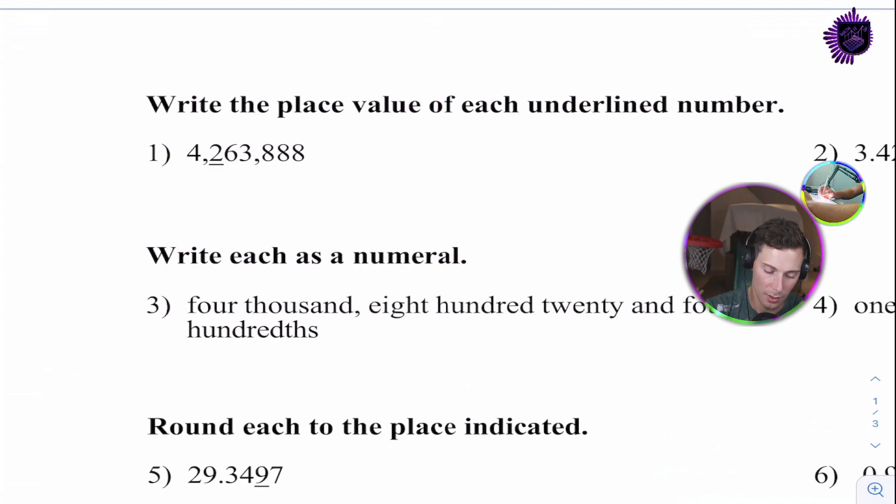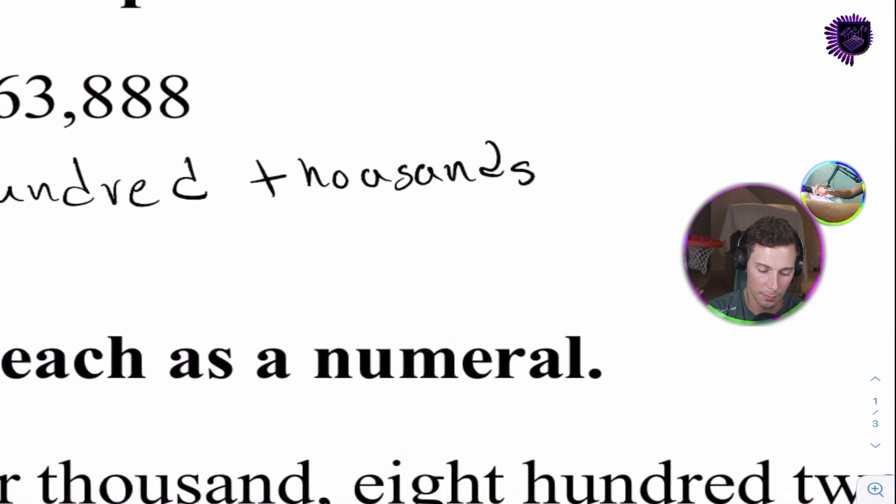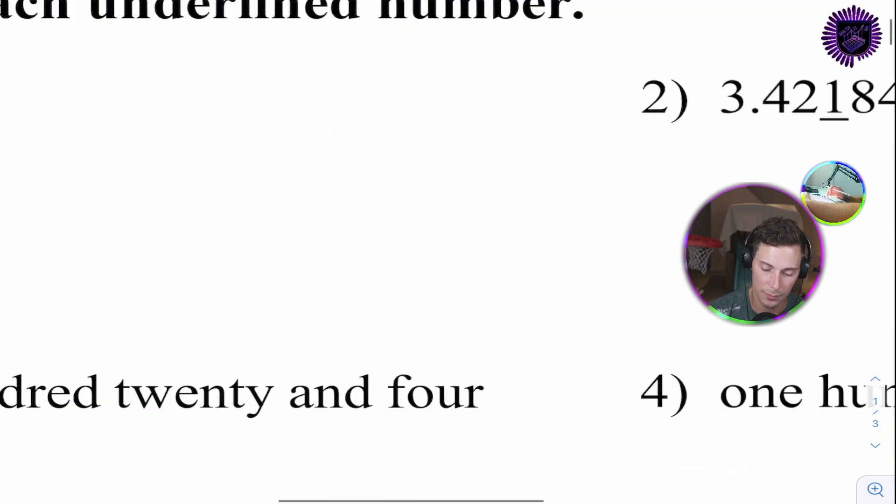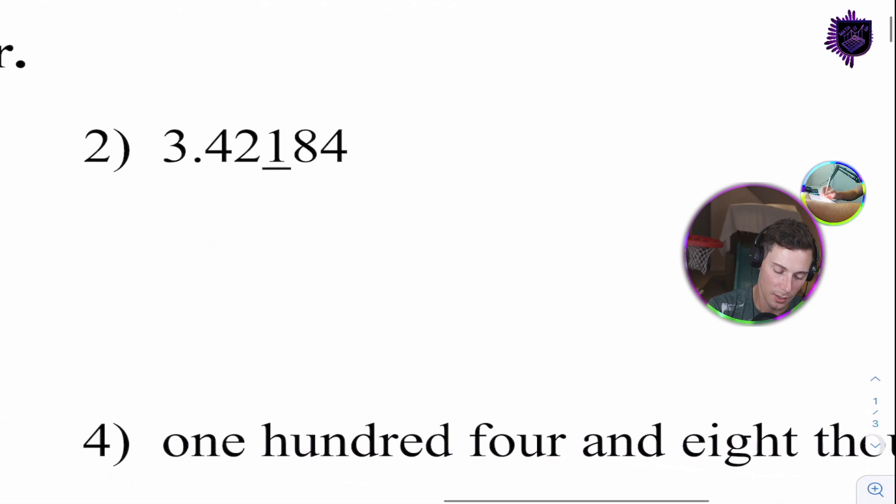this first one is 1, 2, 3, 4, 5 over there, and it's 100,000. 100,000, sorry, my writing there, 100,000s. Question number two is going to be thousands.